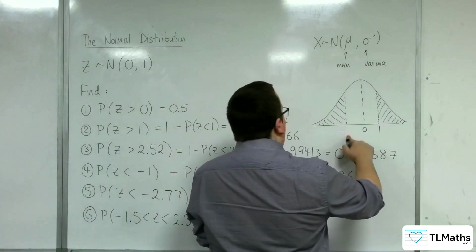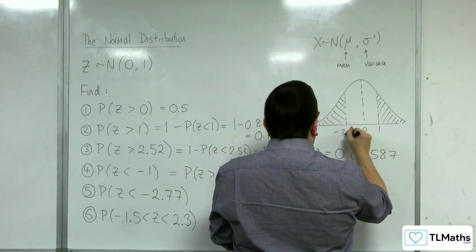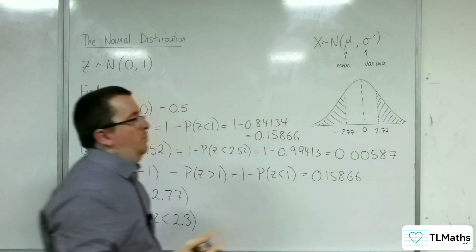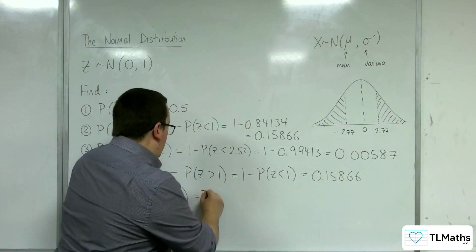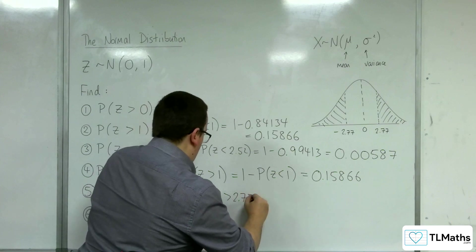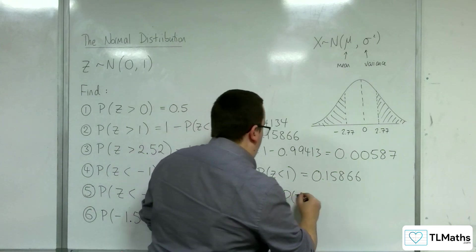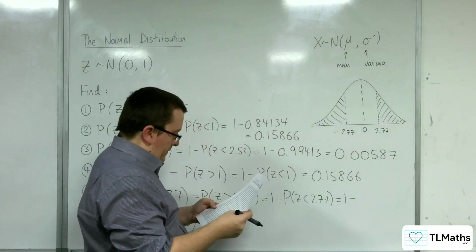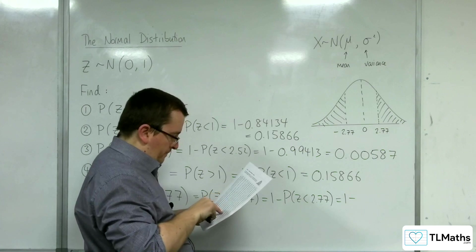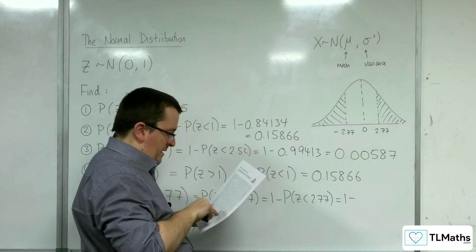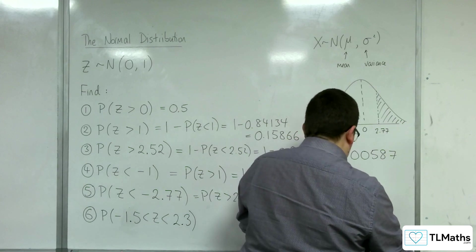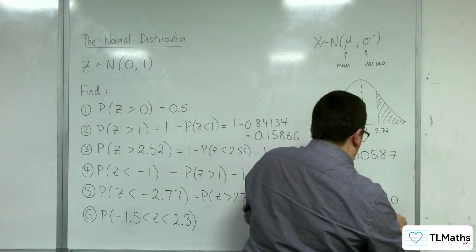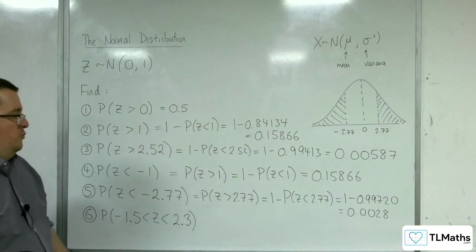Right, so if this had been negative 2.77, then that is precisely the same as greater than 2.77, right, for exactly the same reason. So that's 1 take away the probability of Z being less than 2.77. Right, 2.77, 0.99720. So 0.0028 is the correct probability.